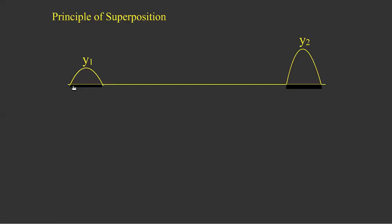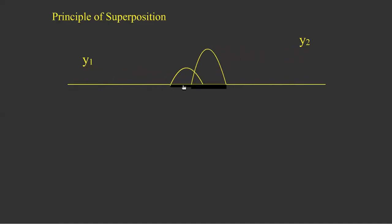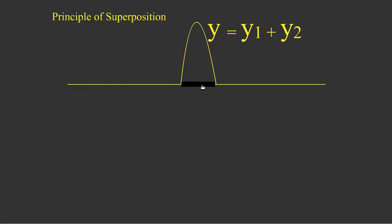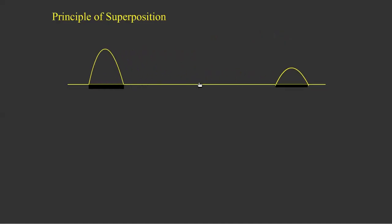Principle of superposition: consider a crest represented by Y1 — the displacement of the particle due to this crest — and Y2 represents another crest, the displacement due to that crest. When these two crests or waves meet at a common region, this is known as superposition. Where they superpose, we get a single resultant wave. After superposition, the two waves move in their respective directions.